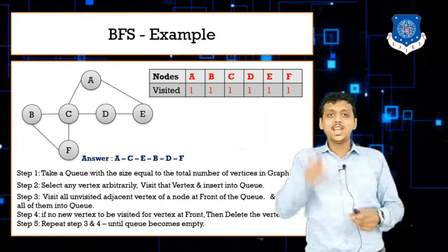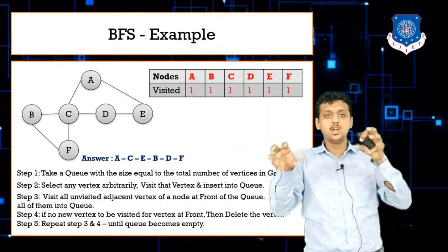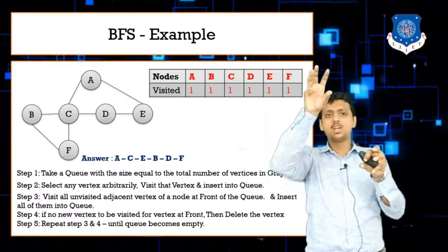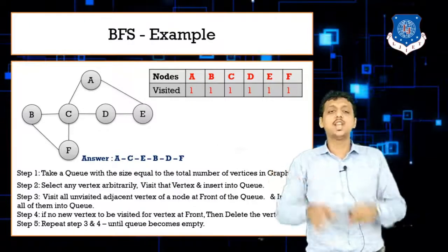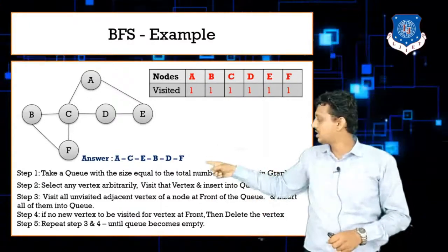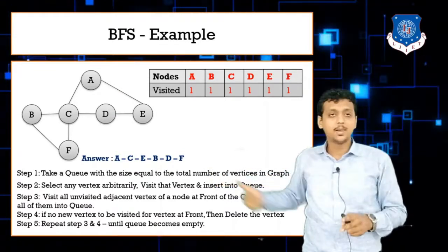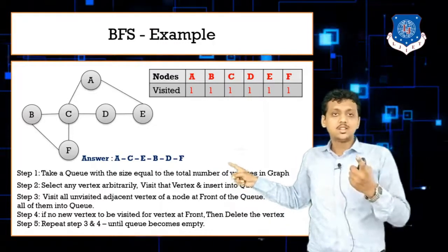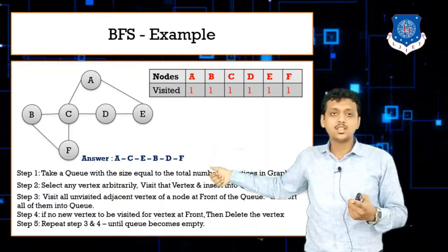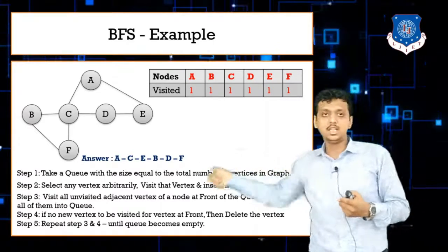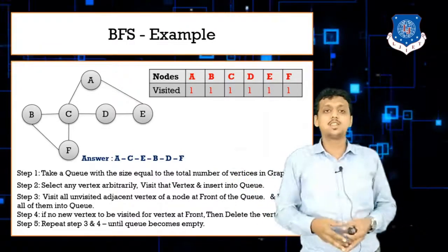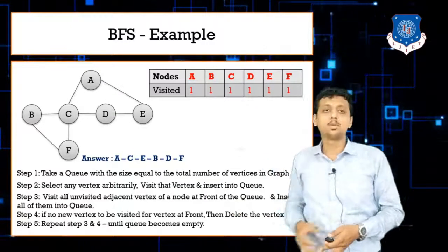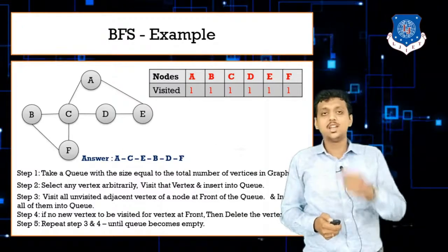The final BFS traversal answer is: A, C, E, B, D, F. The pattern is: visit a node, then all its adjacent nodes in arbitrary order. Start with A, write its adjacent nodes C and E; then take C and write its adjacent nodes B, D, and F. You can compute the BFS answer in five to ten seconds using this approach, though in an exam you should follow the full algorithm.